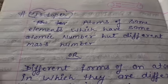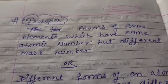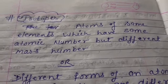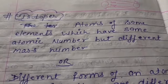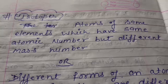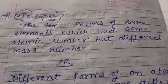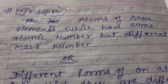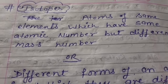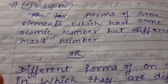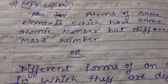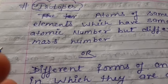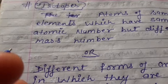Good morning, chemistry class. In the last class we discussed the Rutherford model — his observations and conclusions. He proposed an atomic model with the following points: according to Rutherford, an atom is a hollow sphere in which most of the part is empty, so most alpha particles will pass through without any disturbance.